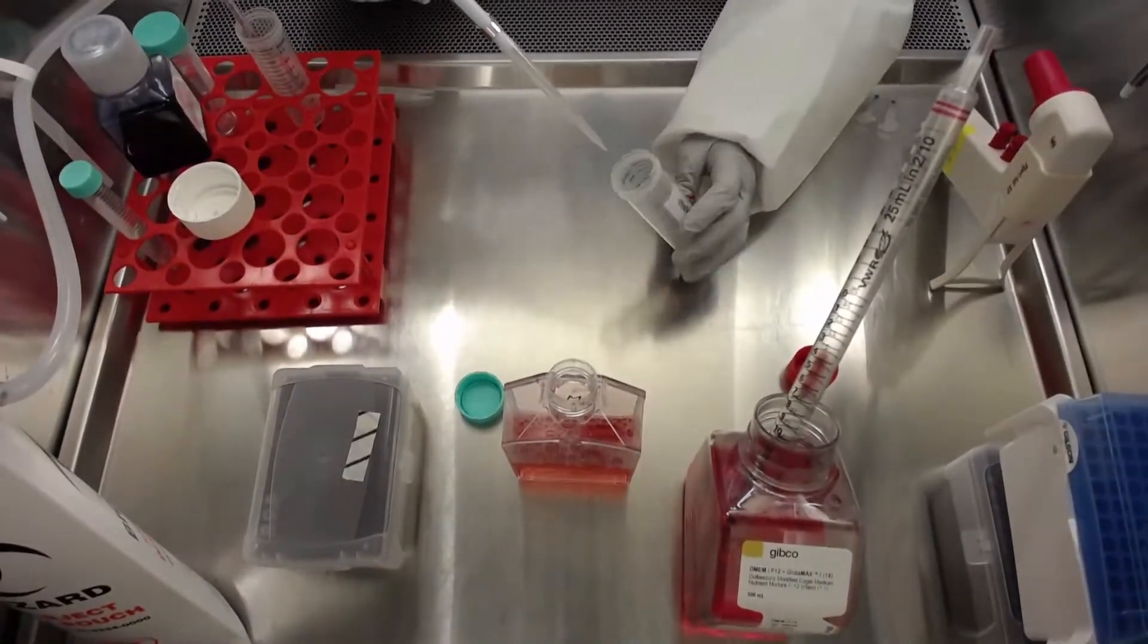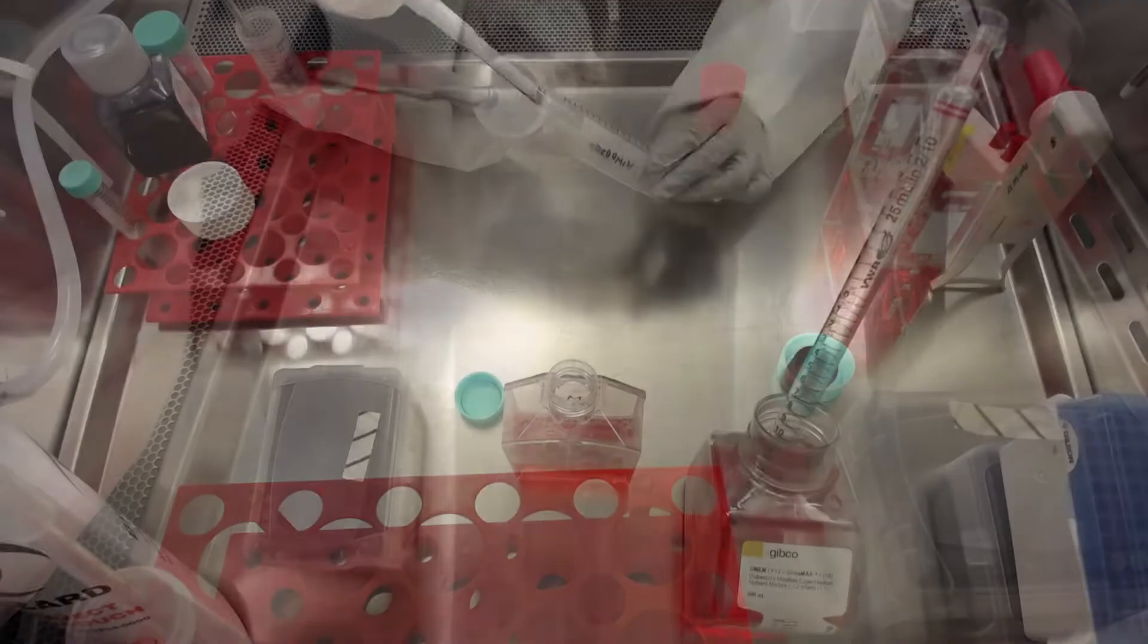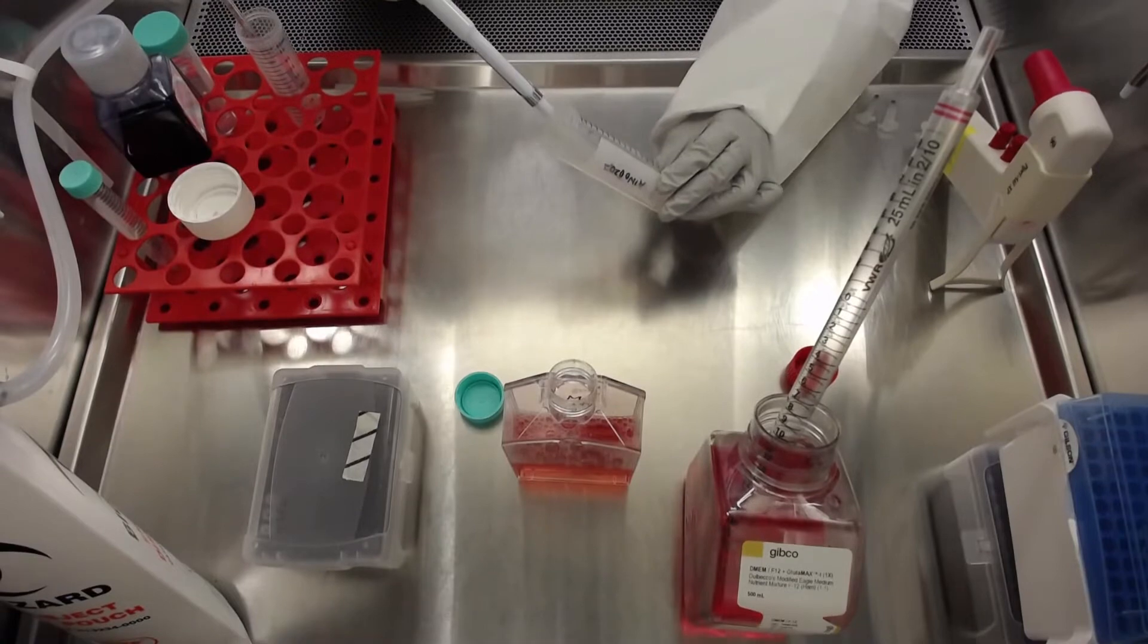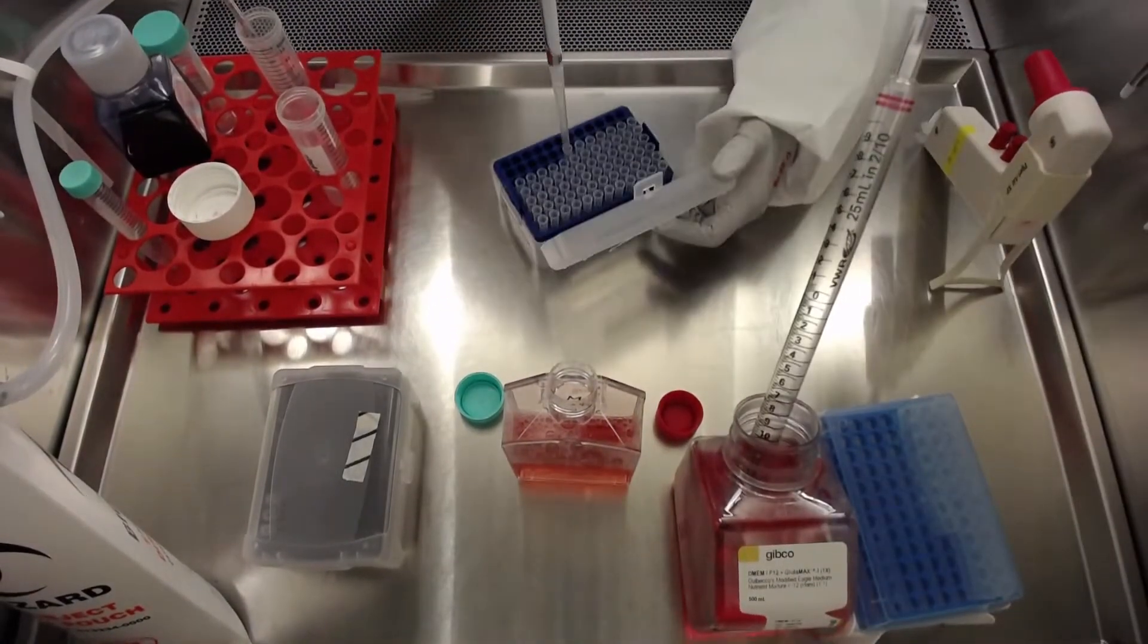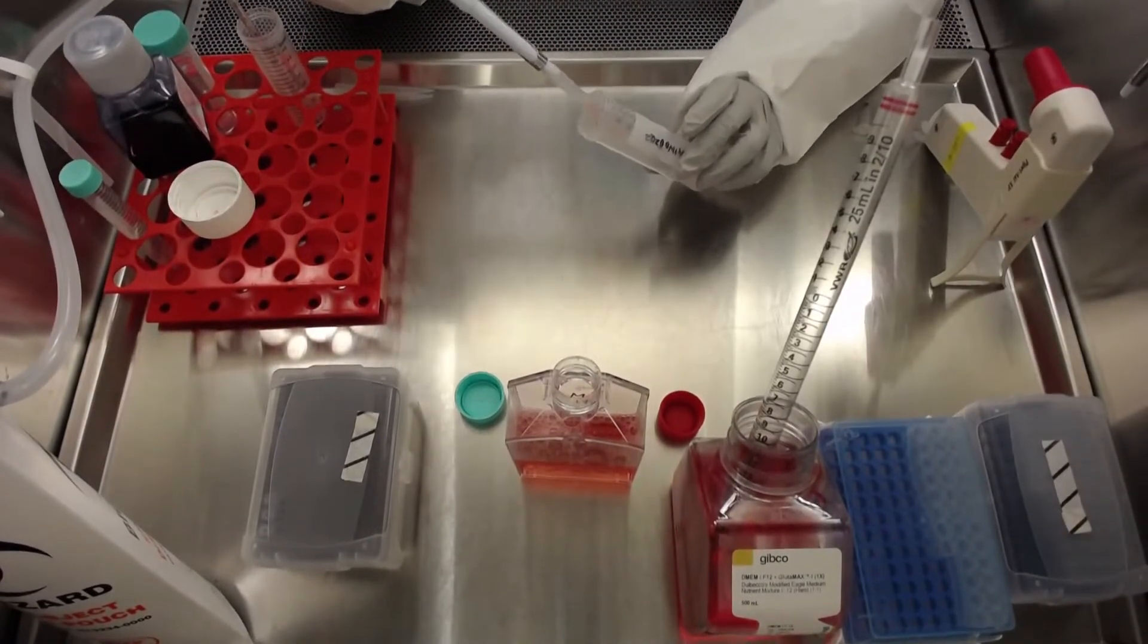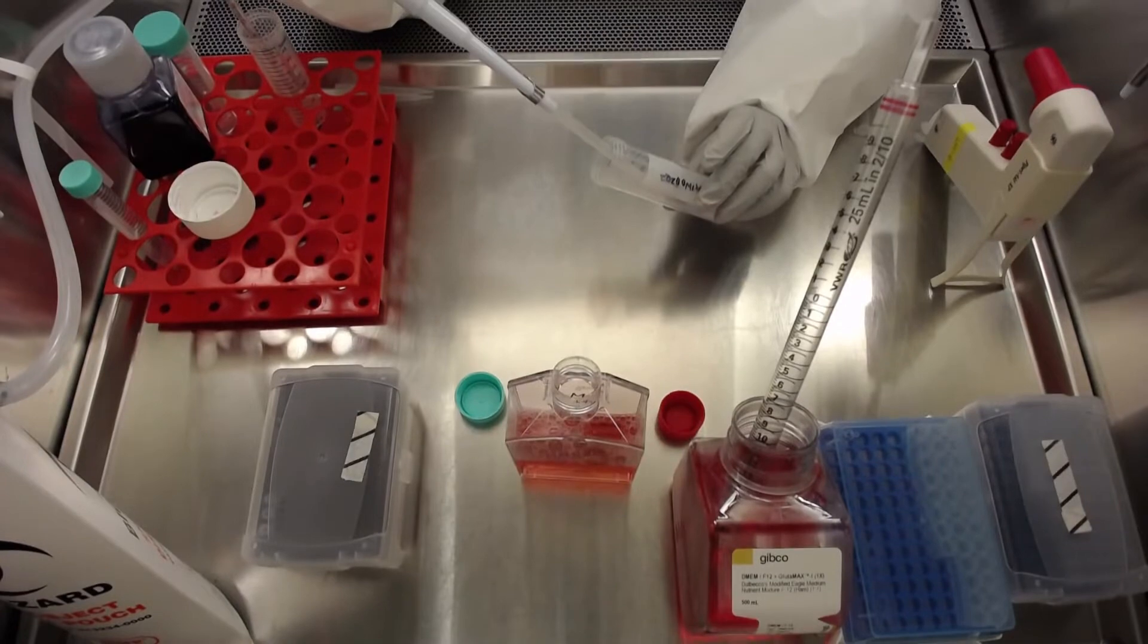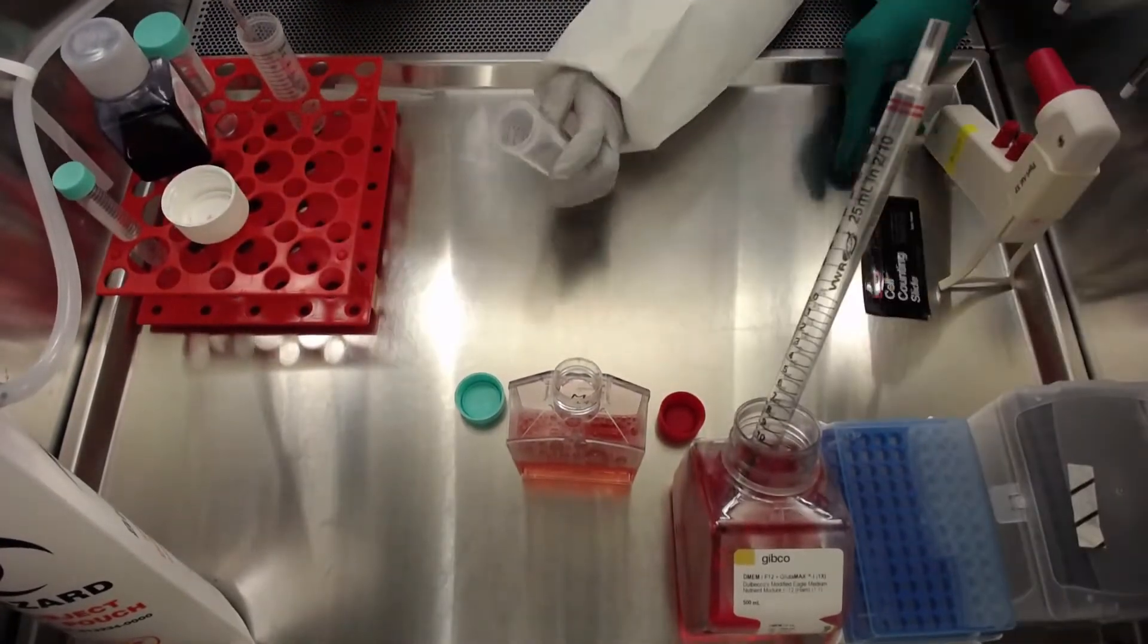To create a single cell suspension, add 1 milliliter of neuronal induction media with rock inhibitor, and re-suspend the pellet up and down, first by using a 5 milliliter serological pipette, then a 1 milliliter tip to continue the process, and finally, a 200 microliter tip placed on top of a 1 milliliter tip. It is crucial to seed single cells at this step to get uniform EBs later on. You should take as much time as needed to carefully make a single cell suspension.